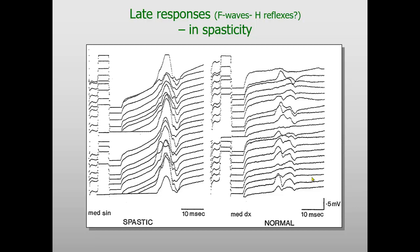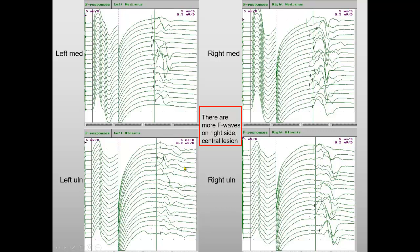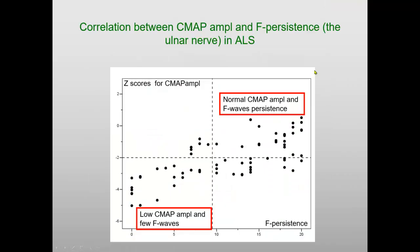We have usually looked at the increase in latency and reduction in number, but we can also have the other way around — too many F-responses — and that is in spasticity, where many axons give rise to an F-response. Here is the normal side in a patient who is spastic on the left side. You can see that many F-responses have summated to give these high-amplitude signals and fill up every trace. Here is another patient where the right median and ulnar show more responses than the left — these were very slight clinical signs of increased reflexes on that side.